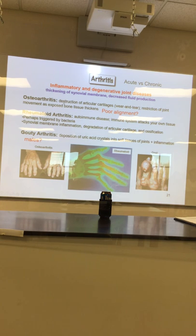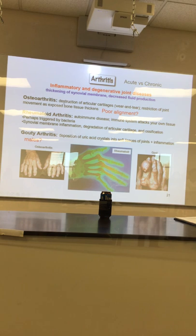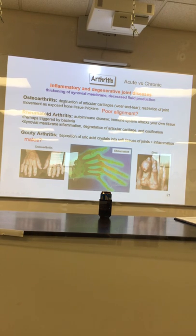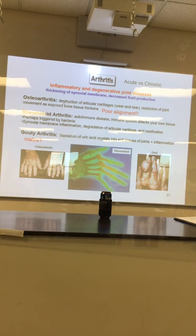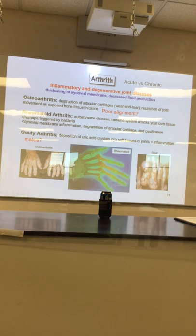Those sharp-edged crystals cause all sorts of pain as they tear into the cartilage. Anytime you're releasing bradykinin or other inflammatory mediators in the joint cavity, it's going to hurt. Interestingly, certain red fruits — the classic example is black cherries — really help with gout for whatever reason.